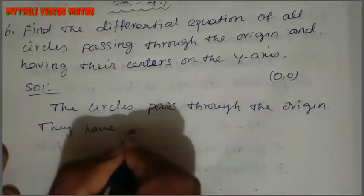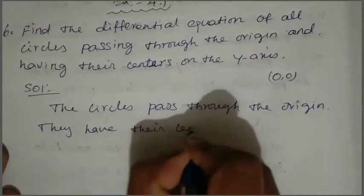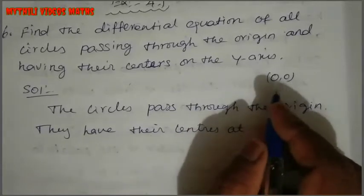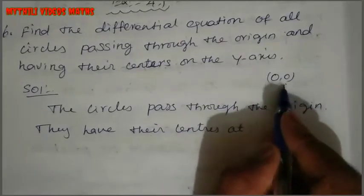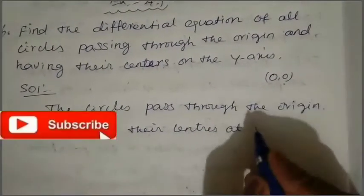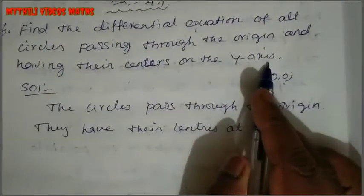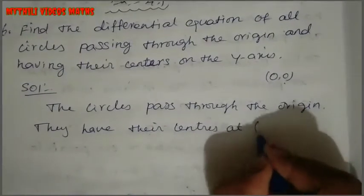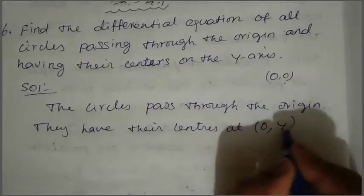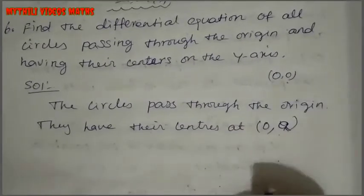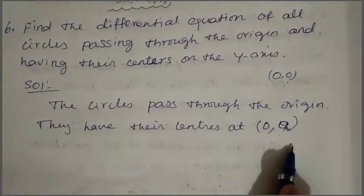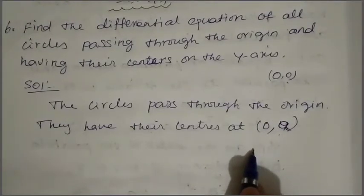The circles have their centers on the y-axis. On the y-axis, x equals 0. So if the center lies on the y-axis, we can find that x equals 0. The center point is (0, a), where a is the radius.